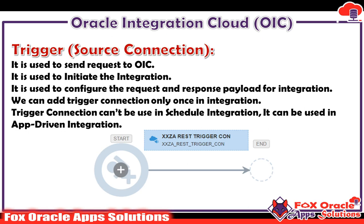Trigger connection is also known as source connection. We use trigger connection to send the request to Oracle Integration. It is used to send a request to OIC and to initiate the integration. Suppose we have created an integration — we have a start endpoint that will initiate the integration, and for that endpoint we will use the trigger connection.